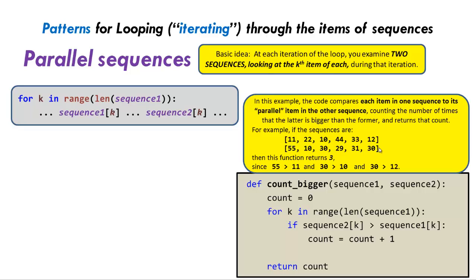Here's a concrete example. Suppose you have two sequences and you want to see how many times the item in the second sequence is bigger than its parallel item in the first one. 55 is bigger than 11 — that's one. 10 versus 22? Nope. 30 is bigger than 10 — that's two. 21 versus 44? Nope. 31 versus 33? Nope. 30 is bigger than 12, so there are three places where the item in the second sequence is bigger than its corresponding item in the first. Here's the code: we go all the way through the length of sequence one, and if sequence two at position k is bigger than sequence one at position k, we increment our count.